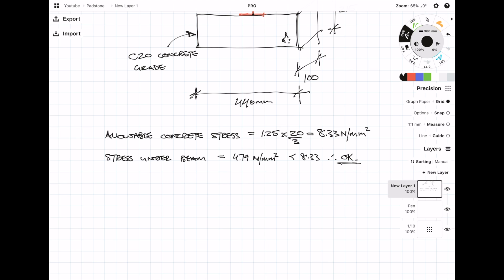So now we want to check the stress under the padstone. Because of the height of the padstone we can see that the 45 degree spread from the edge of the steel beam is more than enough to spread across the length of the padstone. Like calculating any form of stress, it's the force over area. So the stress is simply 70 kN divided by 440 by 100.